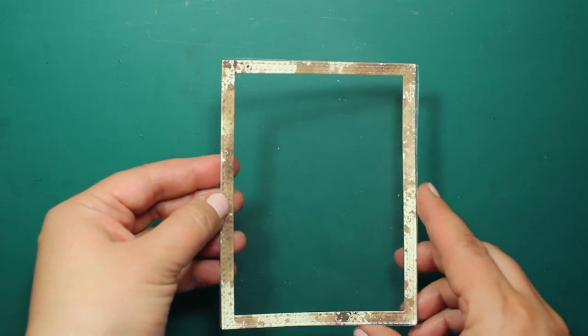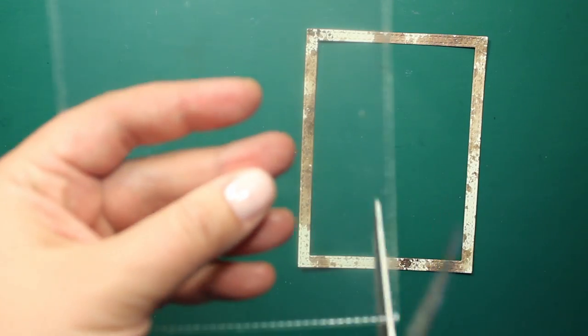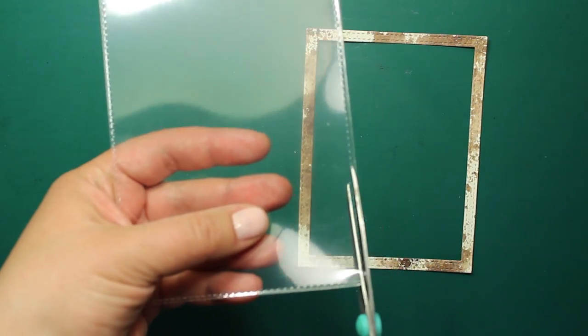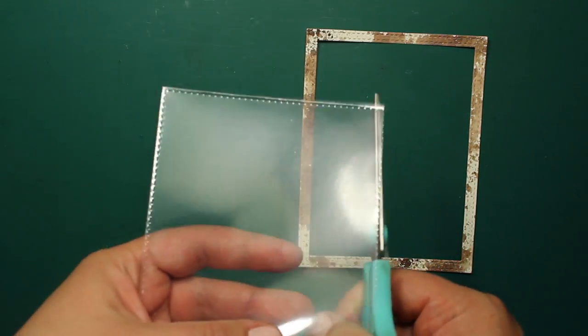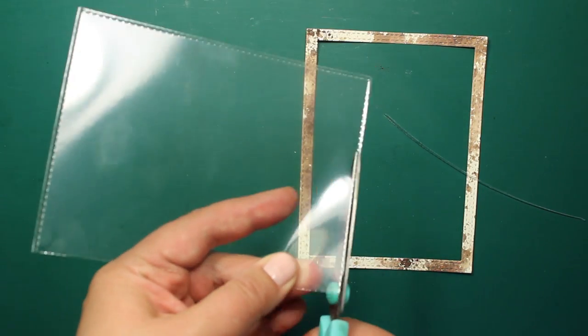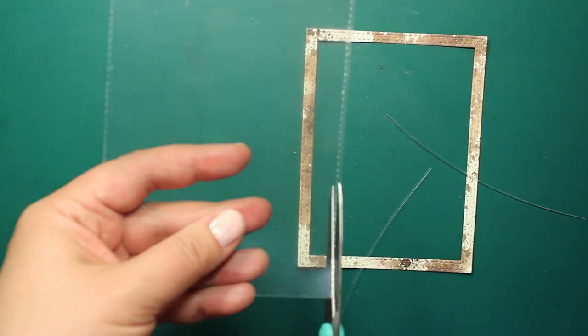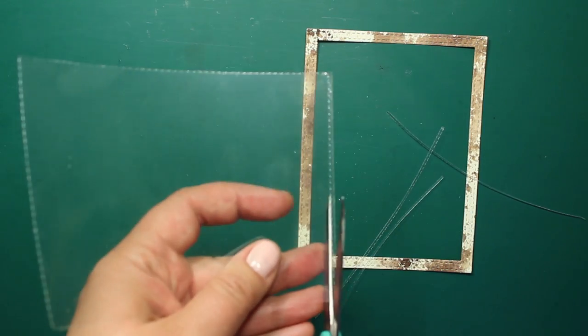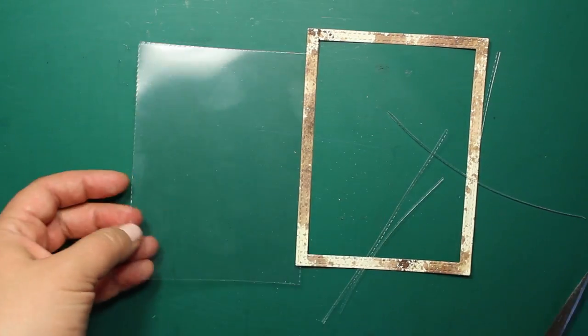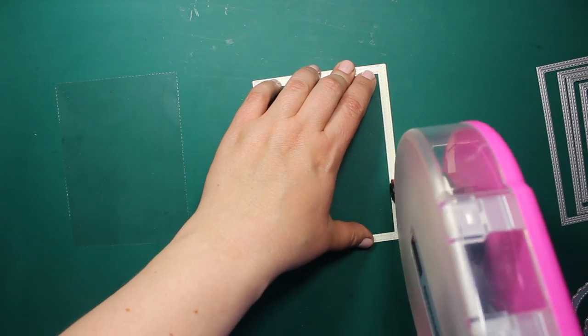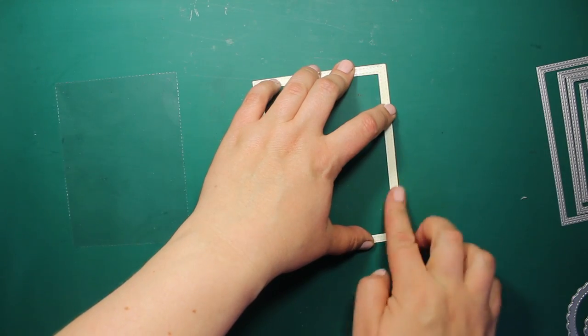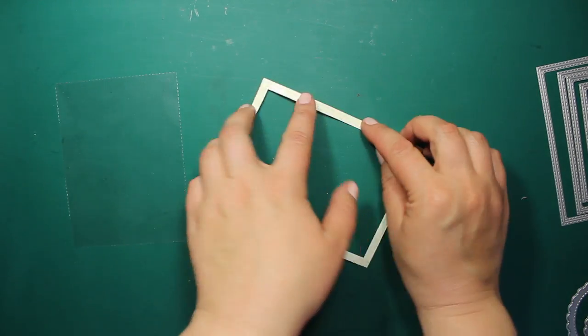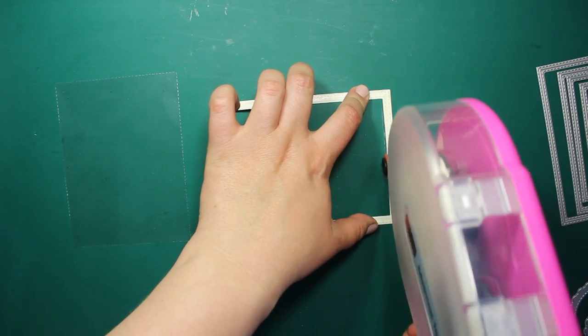I have cut out the acetate panel with the same die and to make it a tiny bit smaller, I'm using stitching as a guide to trim off the edges. I'm doing it because I don't want the acetate to be seen at the edge. So now I am applying tape adhesive at the wrong side of the frame and sticking down the acetate.